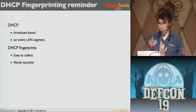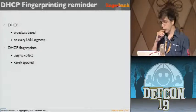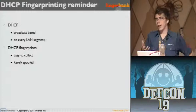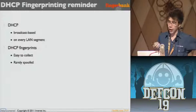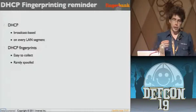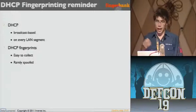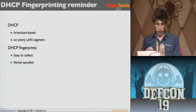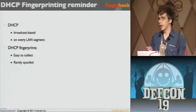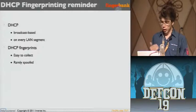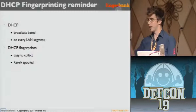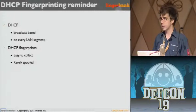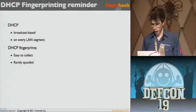DHCP fingerprints are easy to collect and rarely spoofed. By 'rarely spoofed' I mean — if you are a pen tester and you want to expose yourself as a VoIP phone, for instance, not a lot of people know how to do that. I looked into it and found no automated tools to spoof DHCP fingerprints. The only way I found was modifying the DHCP client configuration directly on Linux. So for now it's pretty reliable. In the future there will probably be tools, but right now you can spot BackTrack as an Ubuntu system with fingerprints.